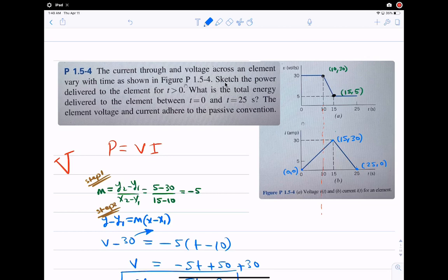The question asks to sketch the power delivered to the element for t greater than 0. Now to sketch any power, I have to find the power. How would I find the power just from the graph? I can. So I would go and find each equation of each line. We have five equations we have to find.